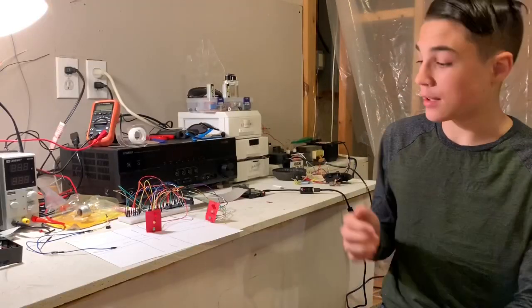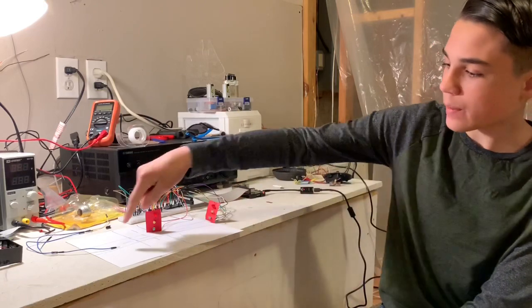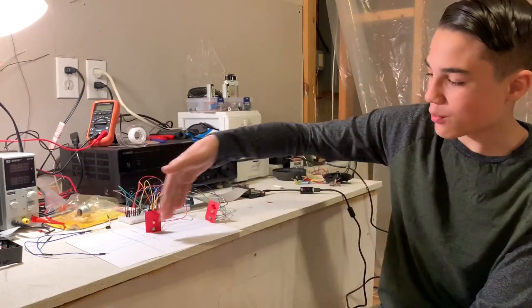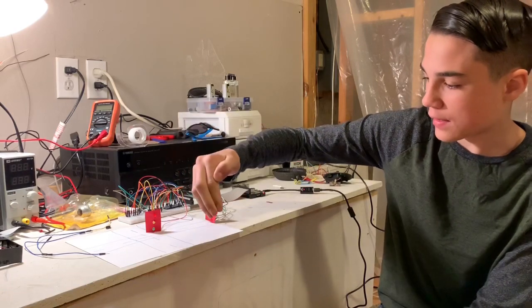And this time I made it two-way so it'll stop traffic going this way and this way, and this way has the right of way. This road would have the right of way so this one would be green first.